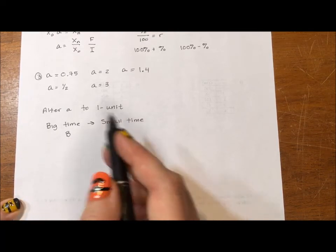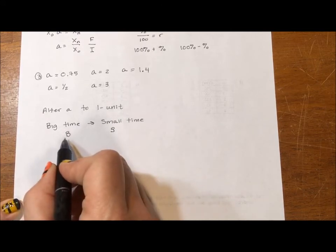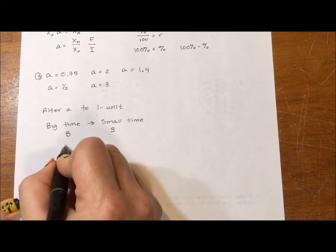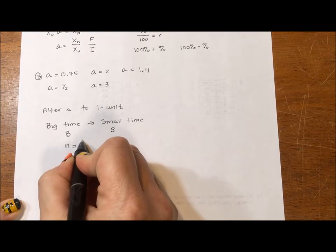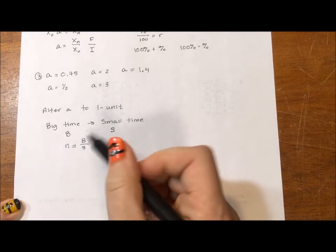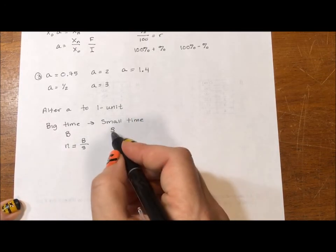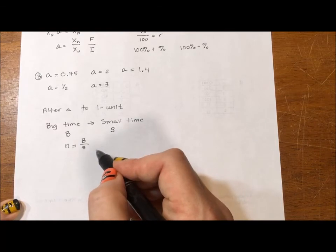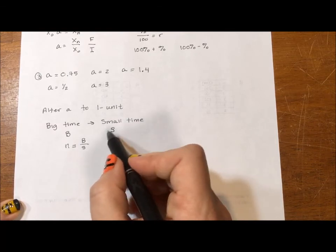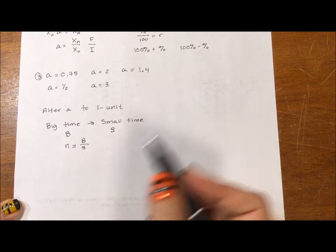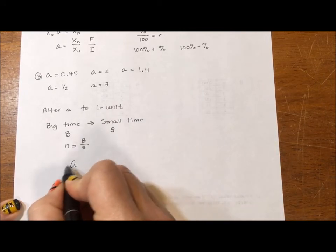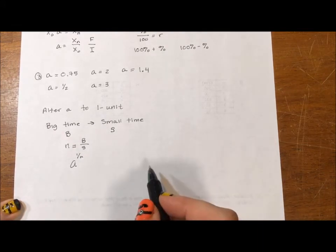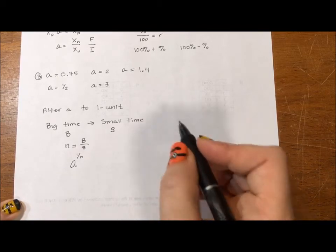You have some big time and you need to go down to some small time. We'll call this B. We'll call this S. And basically, if you're going from some big time to some small time, three months to one month, five months to one month, a week to a day. What we want to do is we want to say N is equal to B divided by S. If it's a week and a day, seven days, we want it to be one day. So that's one seventh. If we had 30 years down to one year, 30 over one, the number of times the small goes into the big is 30 times. And then A gets taken to the power of one over N. And we know it's a fraction because we're going from big to small fraction of a time.